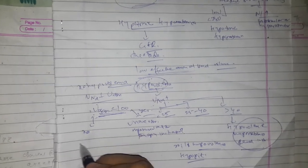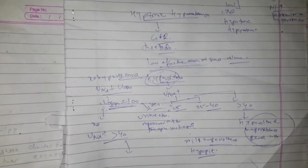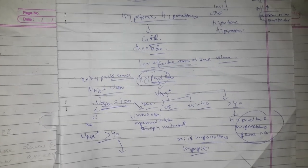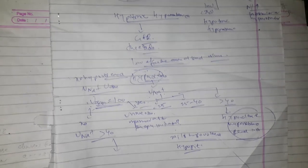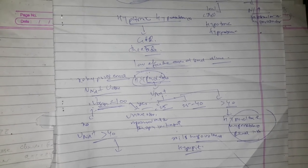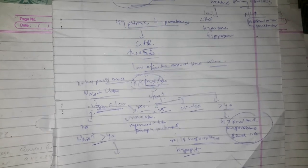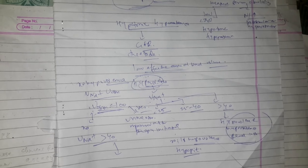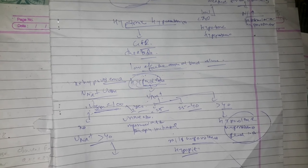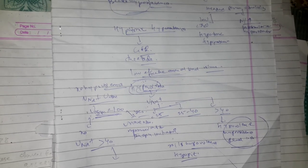If urine osmolality is not less than 100, check urine sodium. If urine sodium is greater than 40, evaluate for glucocorticoid deficiency with an ACTH stimulation test, and check for hypothyroidism. If all these are negative, SIADH — syndrome of inappropriate antidiuretic hormone — may be the cause. You must rule out glucocorticoid deficiency and hypothyroidism first by measuring AM cortisol, ACTH stimulation test, and TSH.